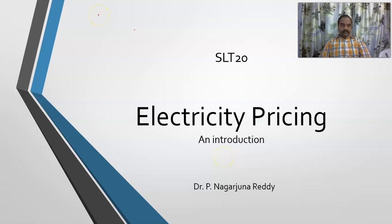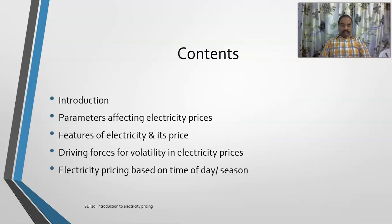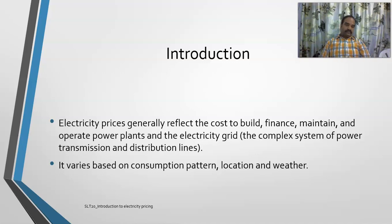Welcome back to Unit Number 3 of the PhD course. Unit Number 3 is all about electricity pricing — what factors affect the pricing of electricity, and in particular why electricity prices are so volatile in nature in the market. In this video lecture we will discuss the simple concept of pricing of electricity, the factors affecting it, and the driving forces for price volatility.